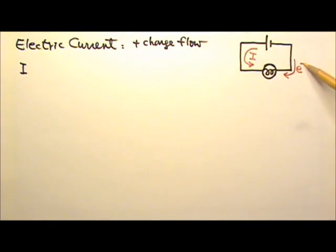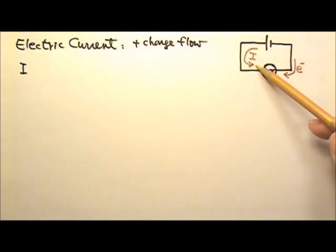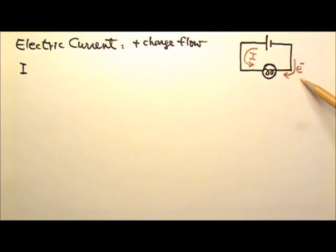So what we really have is negatively charged electrons moving the other way. However, when we study circuits, we usually look at the positive current flow instead of the real negative electron flow.